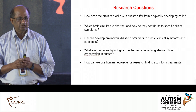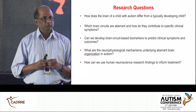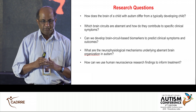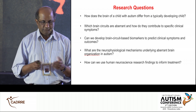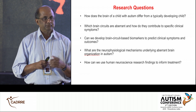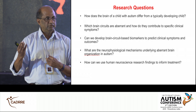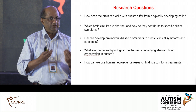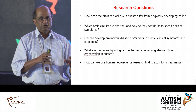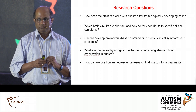I want to start with some broad general questions this work addresses: How is the brain of a child with autism different from typically developing children? Which brain circuits are aberrant? And how do they relate to different types of behaviors and clinical symptoms that we see in the clinic or behaviorally?